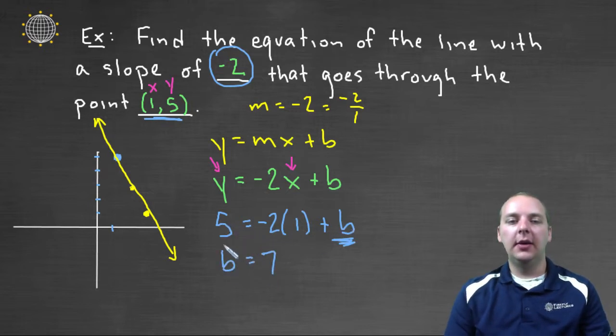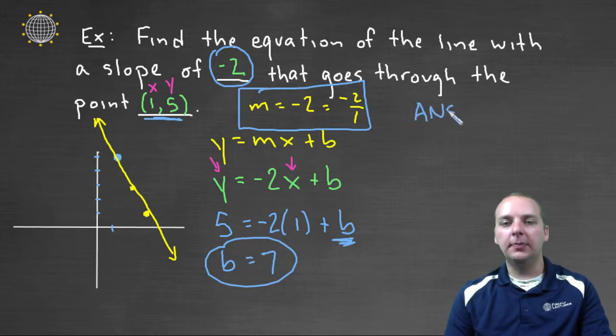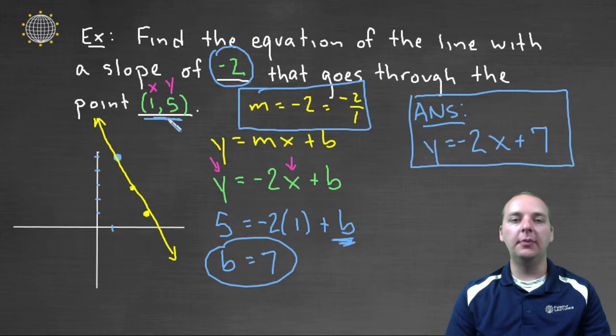So b equals seven. Okay, from here we're pretty much done. Because the m, as we said earlier, was negative two. And the b is seven, so we can write our answer. Our answer is y equals mx plus b. In other words, we have negative two x plus seven. So this is the equation of the line that has the correct slope and that goes through the specified point.